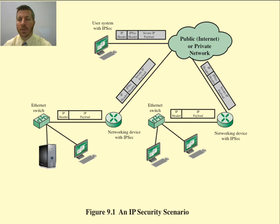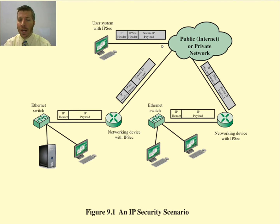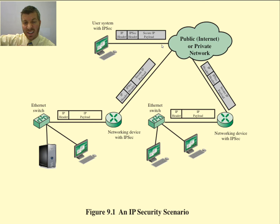Here is an overview of how it works. A user system that has IPsec sends off a packet with the IP header at layer 3, then an IPsec header, and then the secure IP payload. Inside the payload of an IP packet is a segment from layer 4. The user's data becomes the layer 7 message, and as we go down through the layers, each layer adds a header whose payload becomes what was received from the layer above.